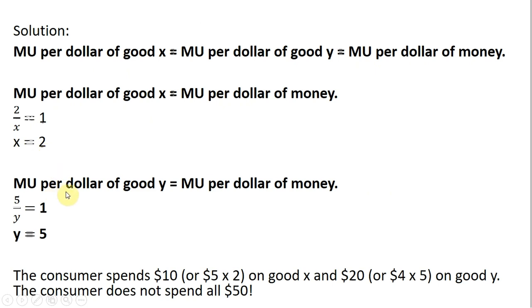Moving on, setting the marginal utility per dollar of good y equal to the marginal utility per dollar of money. 5 divided by y is the marginal utility per dollar of good y. Setting that equal to 1, solving for y, y equals 5.